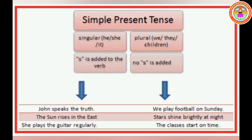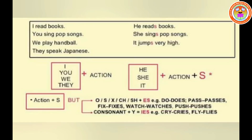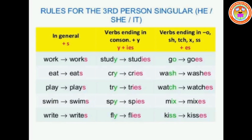Once again, listen carefully. If the subject is a singular noun or a pronoun in the third person — he, she, it — we have to add -s or -es to the verb. Whereas for first person (I), second person (you), and plural noun or pronoun, there is no change in the verb form. For he, she, it — third person singular — -s, -es, or -ies is added to the present form. You have to follow these rules.